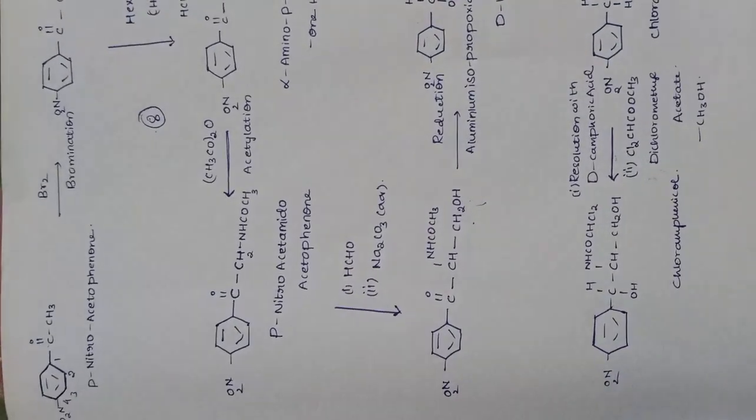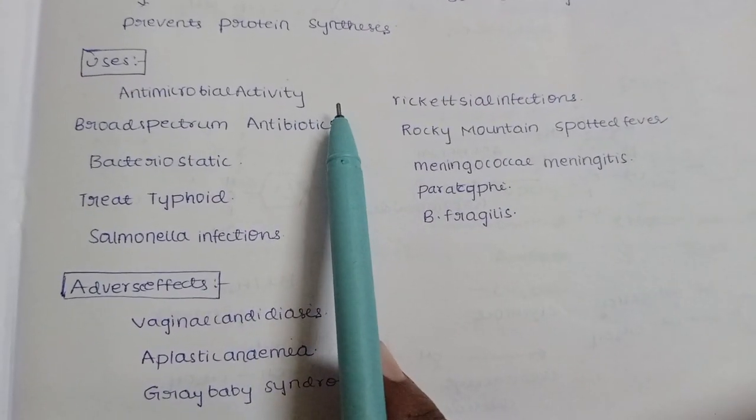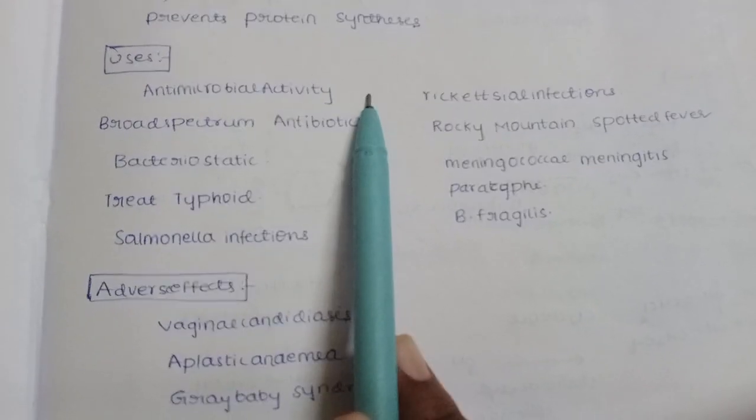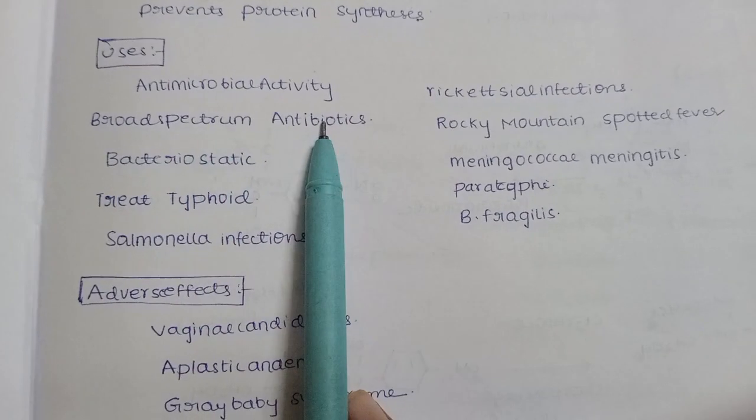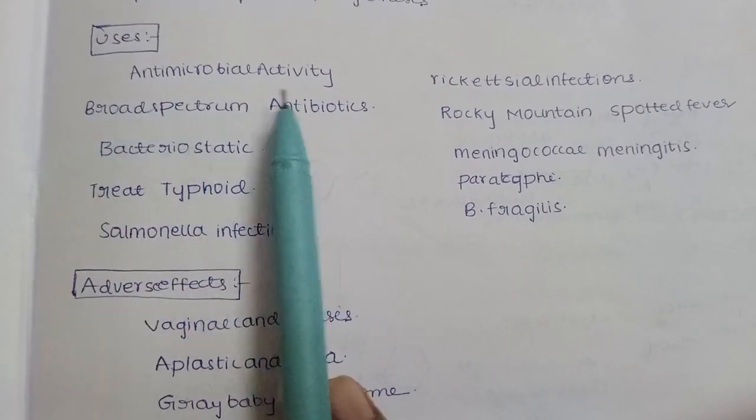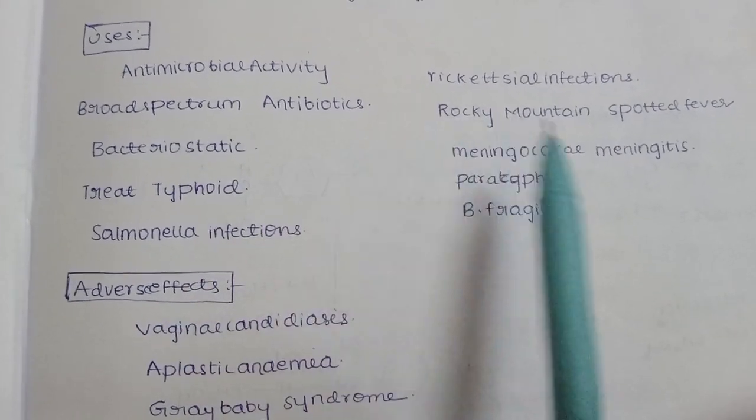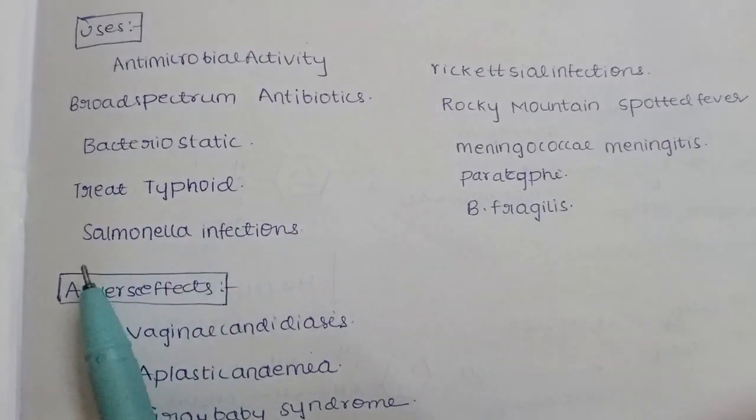This is used as an antimicrobial agent. This is the first antimicrobial agent discovered in 1947. It's a broad spectrum antibiotic, meaning both gram positive and gram negative. It's the drug of choice for typhoid, and paratyphi can also be treated by this.